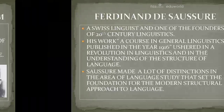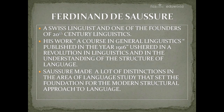Ferdinand de Saussure is a Swiss linguist and one of the founders of 20th century linguistics. His work, 'A Course in General Linguistics', published in the year 1916, ushered in a revolution in linguistics and in the understanding of the structure of language. Saussure made a lot of distinctions in the area of language study that set the foundation for the modern structural approach to language.